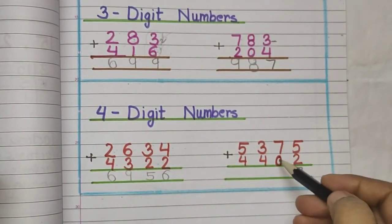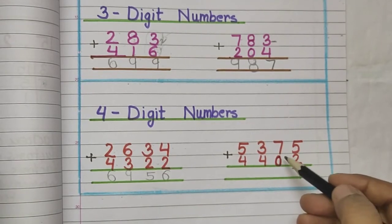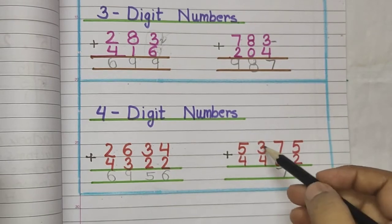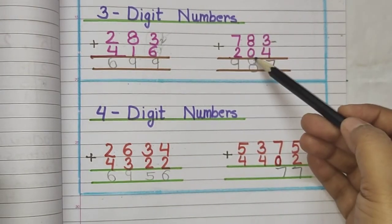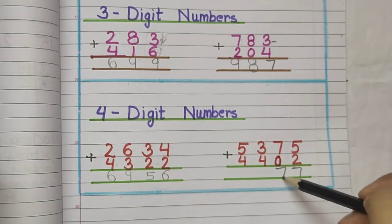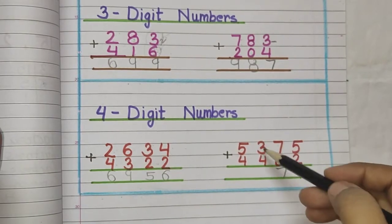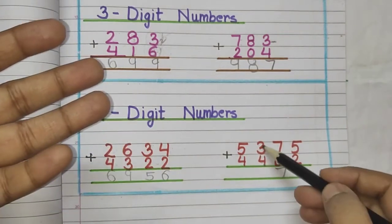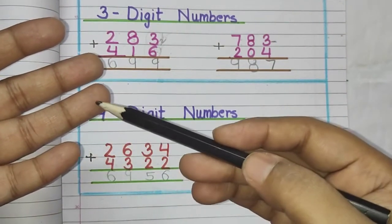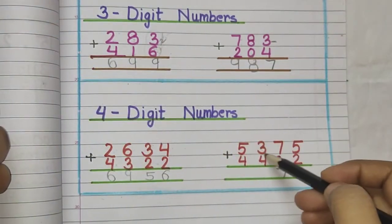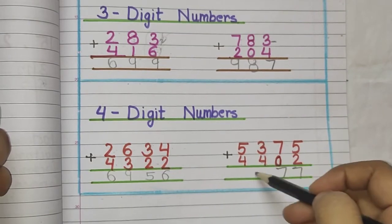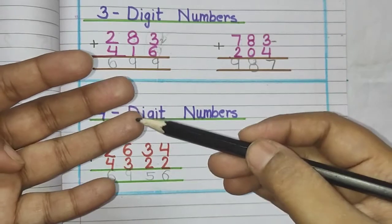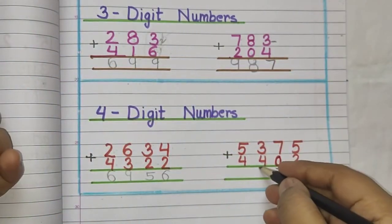Next: seven plus zero — if you add zero, the answer is seven. Then eight plus zero — the answer is eight. And seven plus zero — the answer is seven. Now three plus four: raise four fingers — three, four, five, six, seven — the answer is seven.